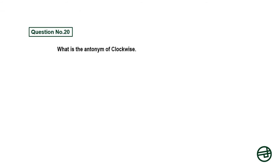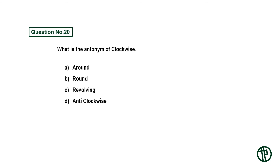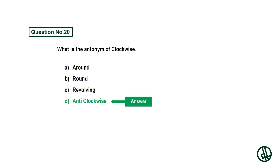Question number twenty: What is the antonym of 'clockwise'? Option A: around. Option B: round. Option C: revolving. Option D: anticlockwise. Answer is option D: anticlockwise.